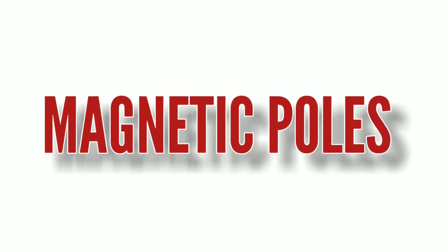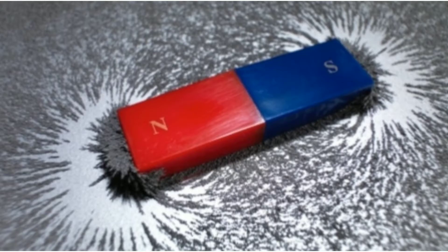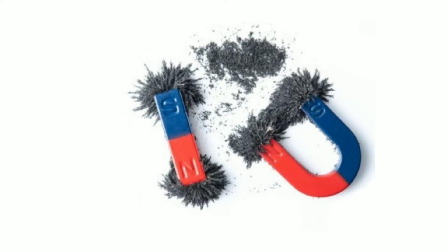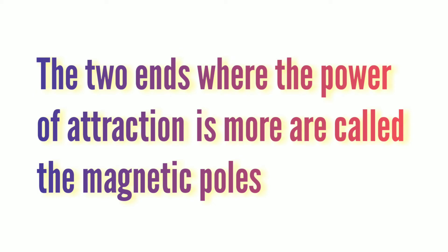Magnetic poles. When you put a bar magnet into a box full of needles, you will observe that many needles are attracted at the ends of it. And you can find the poles by seeing where there are many needles attracted. The two ends where the power of attraction is more are called the magnetic poles.